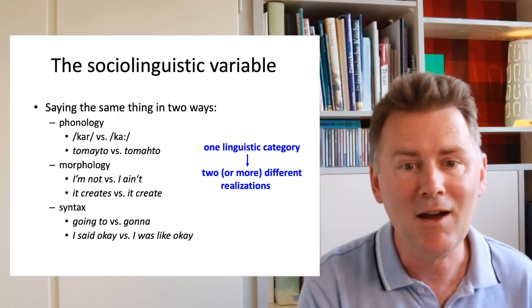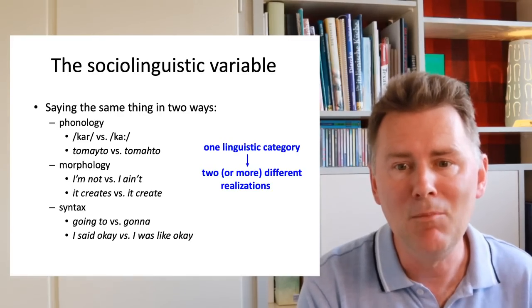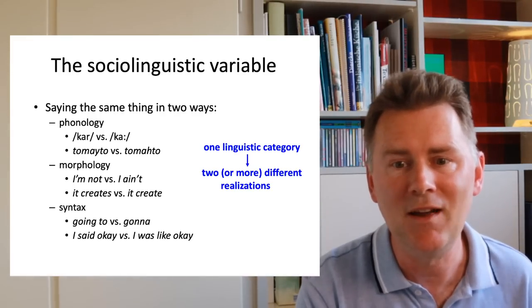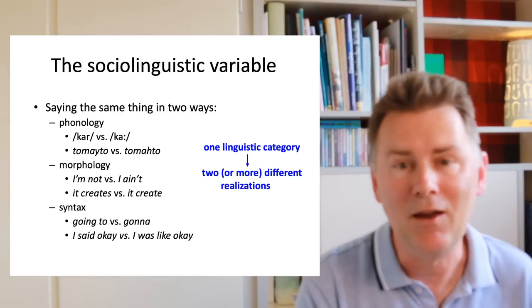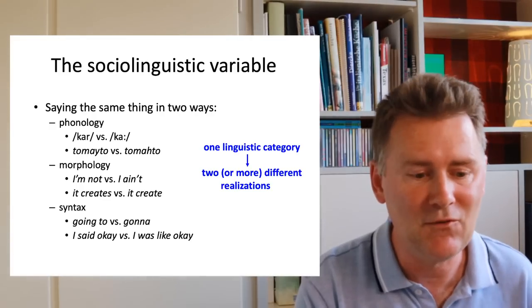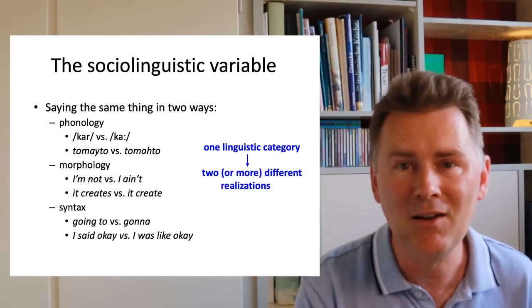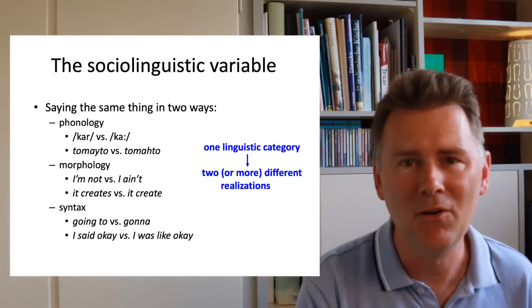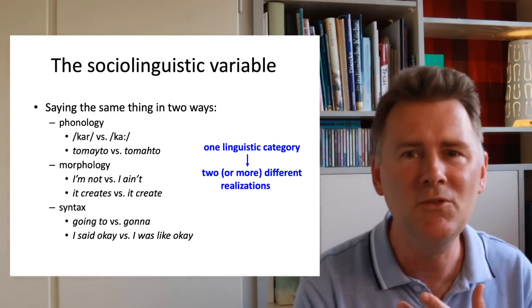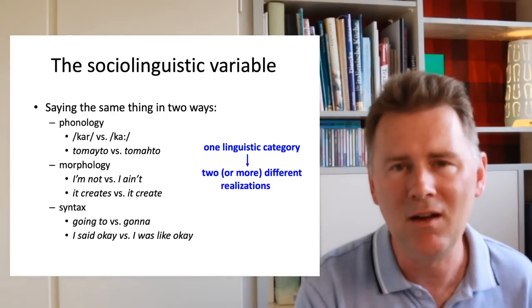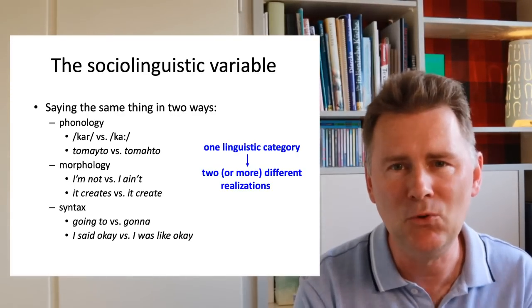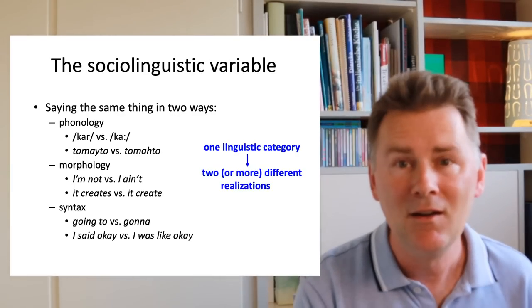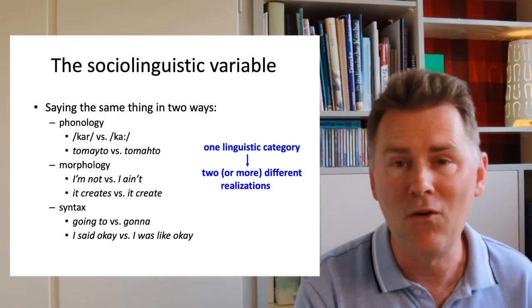Sociolinguistic variables exist on the five different levels of variation that I've discussed earlier. Here on the slide, I just mentioned three of them, namely phonology, morphology, and syntax. So, a phonological sociolinguistic variable would be post-vocalic R, which we have in car, but not in ka. Which one you choose, which one you realize, that says something about your social identity. We also have variables in morphology. So, the example of Malaysian English that we saw earlier, the absence of third-person singular S, the difference between it creates and it create, that is another important variable.